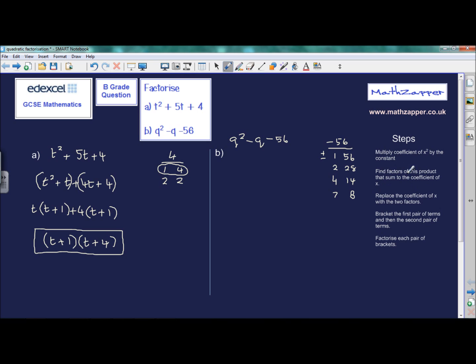So we have found the factors of the product, but we haven't found which pair sum to the coefficient of q, which in this case is minus 1. The pair that will give us minus 1 are this pair, when we add them together. But if we've said minus 7 plus 8, if we add them together that gives us plus 1. So the answer is plus 7 and minus 8. Plus 7 multiplied by minus 8 gives us minus 56. Plus 7 plus minus 8 gives us minus 1. So we're now going to replace minus q with q squared plus 7q minus 8q minus 56.